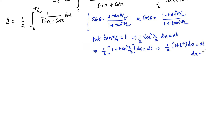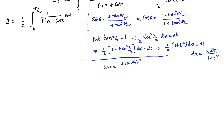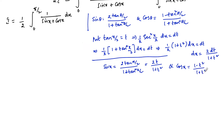So dx = 2dt/(1 + t²). Also, sinx = 2tan(x/2)/(1 + tan²(x/2)) = 2t/(1 + t²), and cosx = (1 − tan²(x/2))/(1 + tan²(x/2)) = (1 − t²)/(1 + t²). Now let us substitute and also change the limits accordingly.